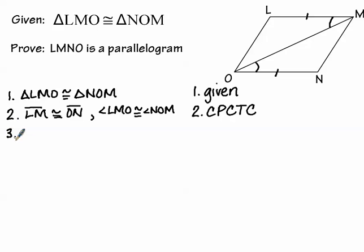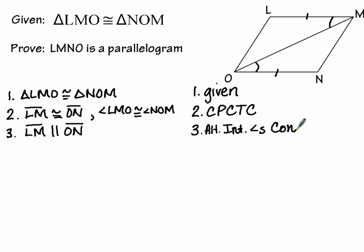You should notice that the pair of angles I've marked congruent are a pair of alternate interior angles. The alternate interior angles converse says that if two lines are cut by a transversal — in this case the diagonal — such that the alternate interior angles are congruent, then those lines must be parallel. So that pair of alternate interior angles in statement two allows us to state that segment LM is parallel to segment ON. Remember it's the converse anytime you state that lines are parallel.